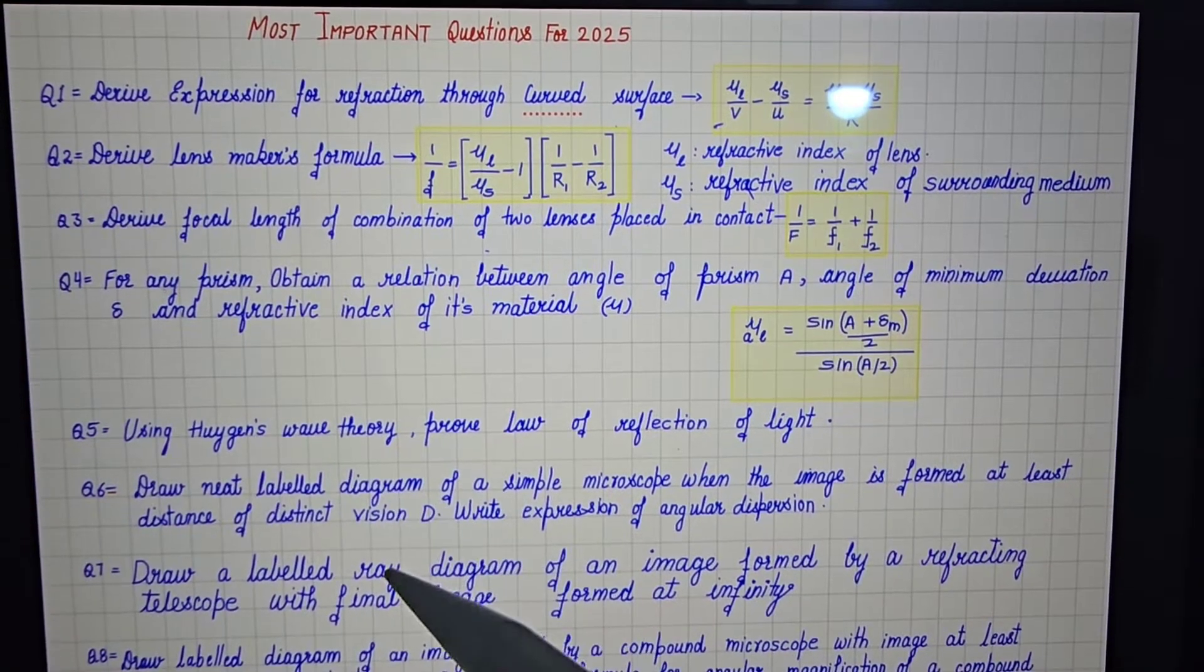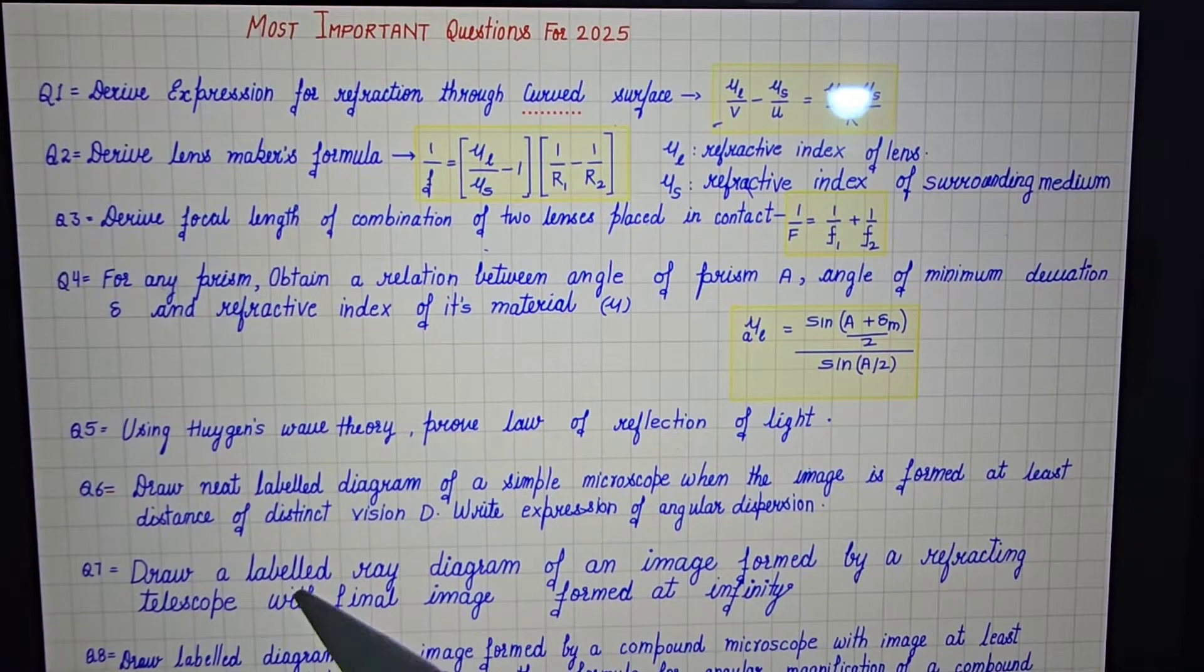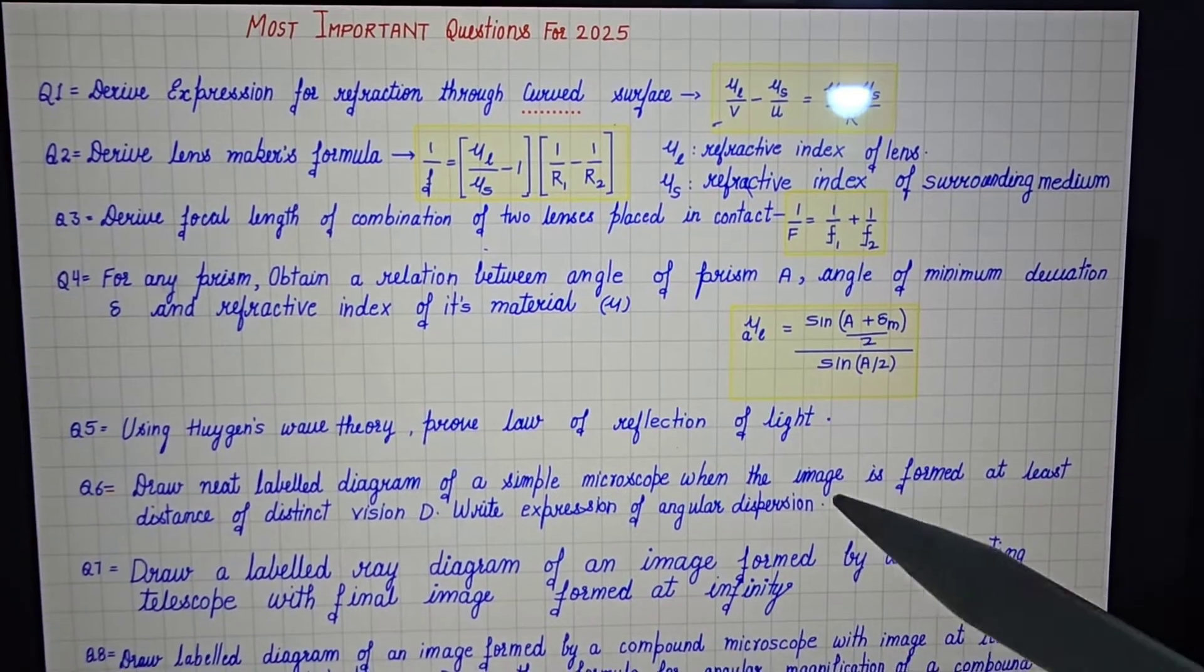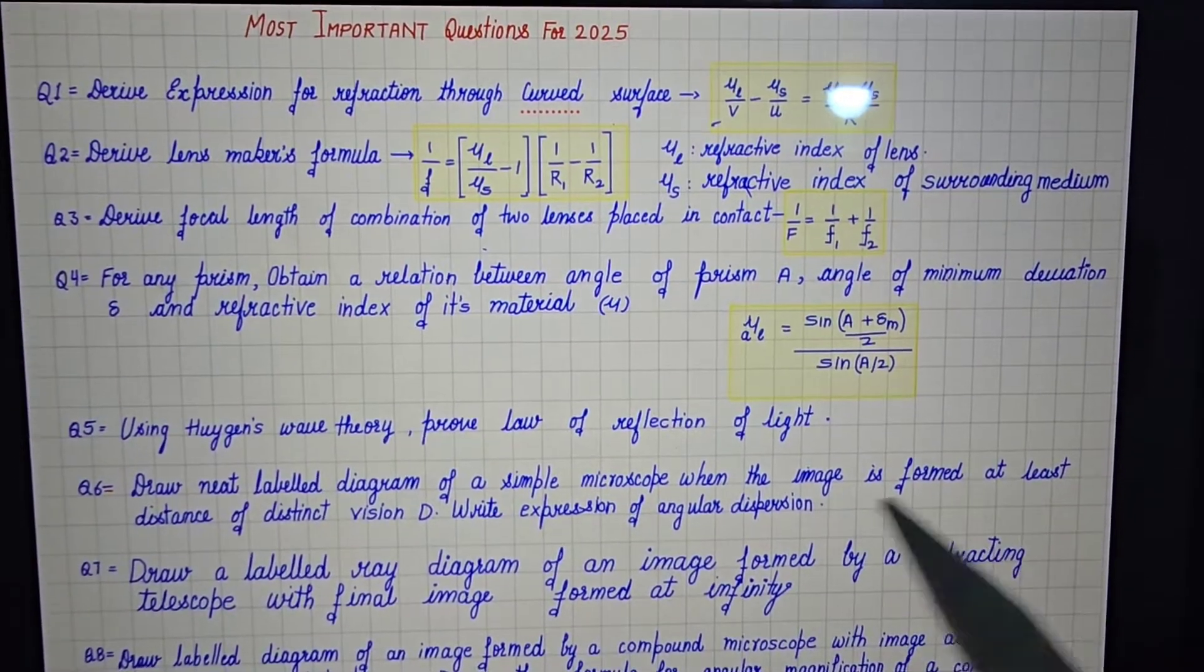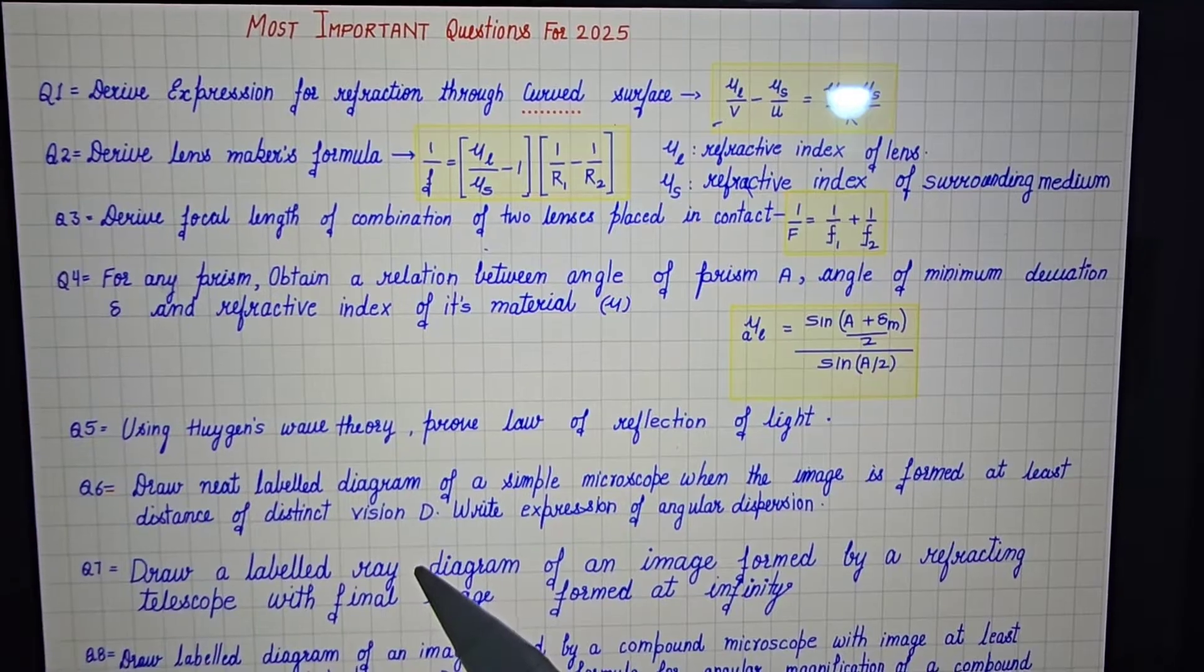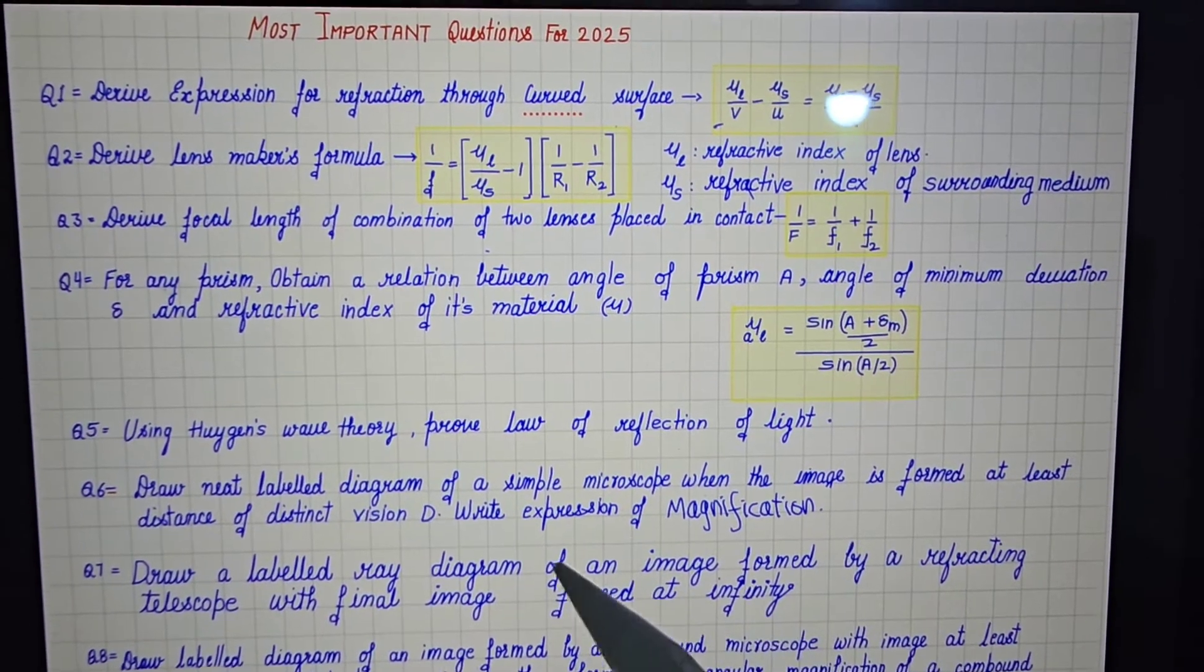Then three ray diagrams are very important children. Ray diagram of simple microscope when image is formed at least distance of distinct vision, and expression of magnification.